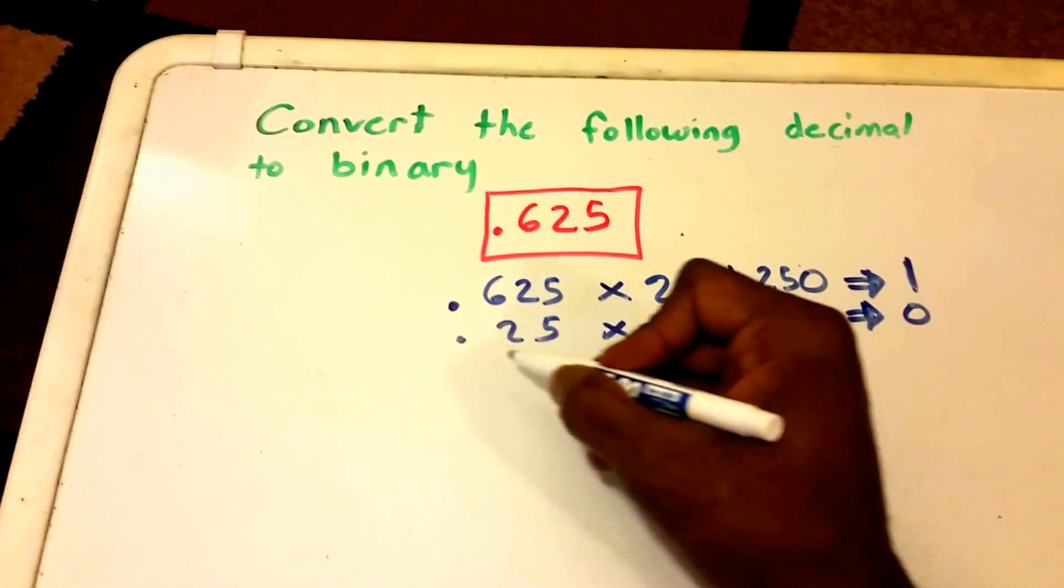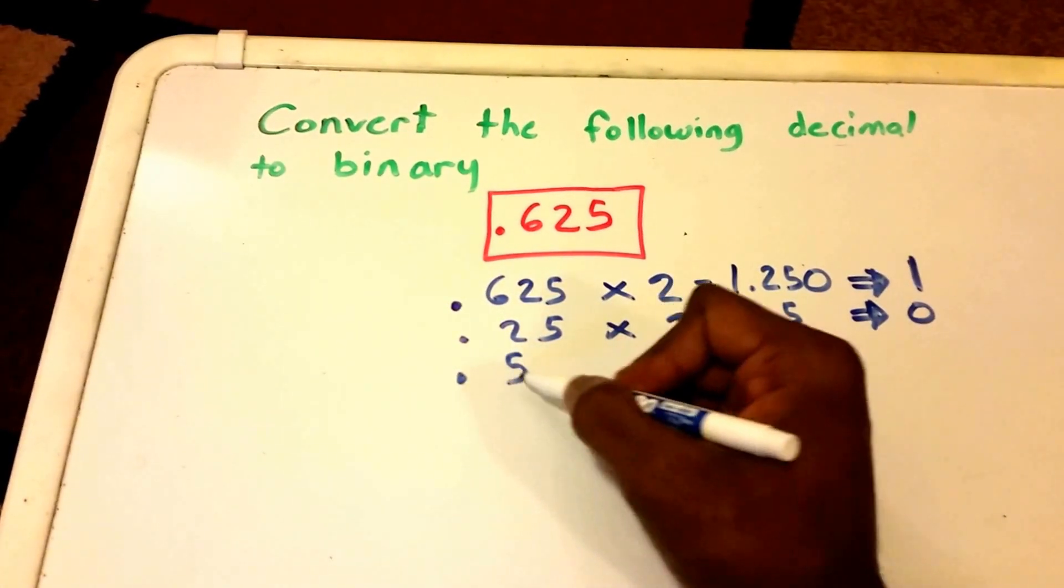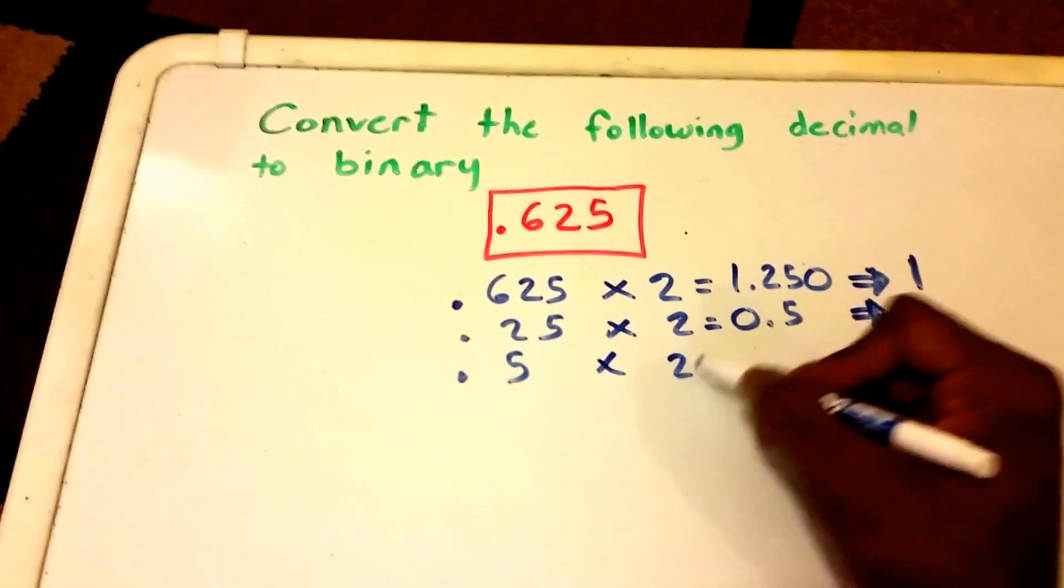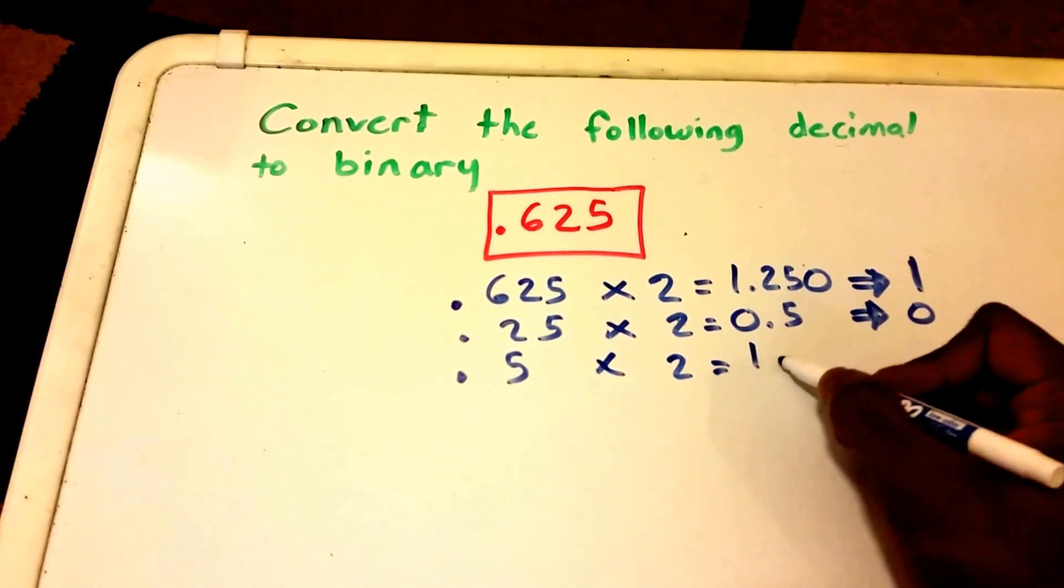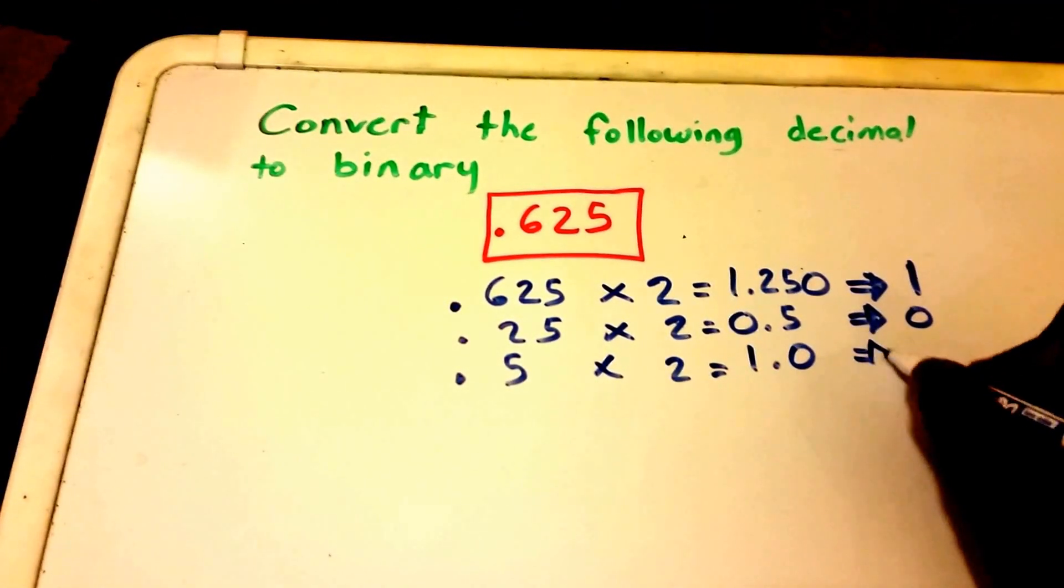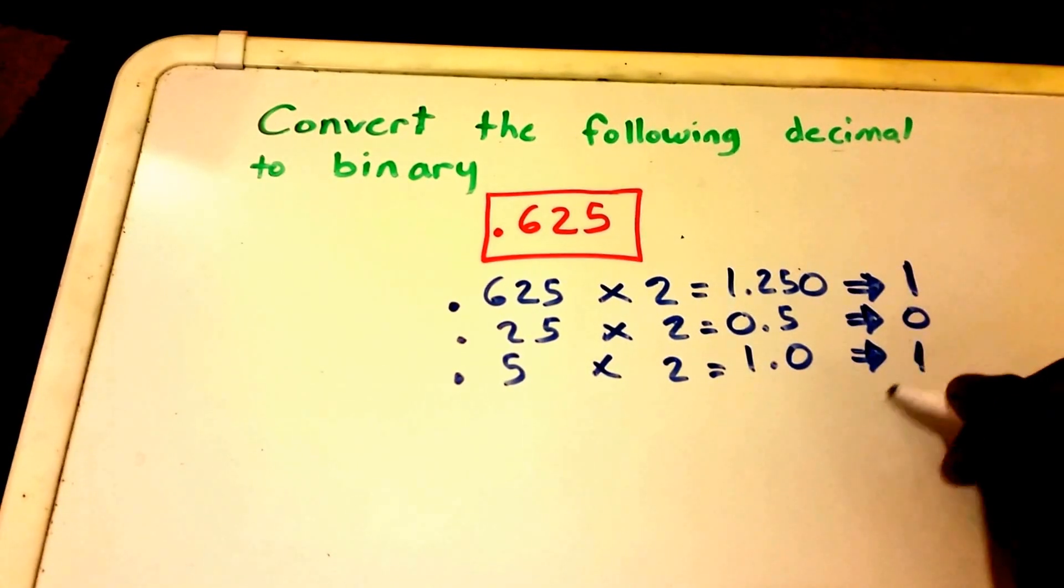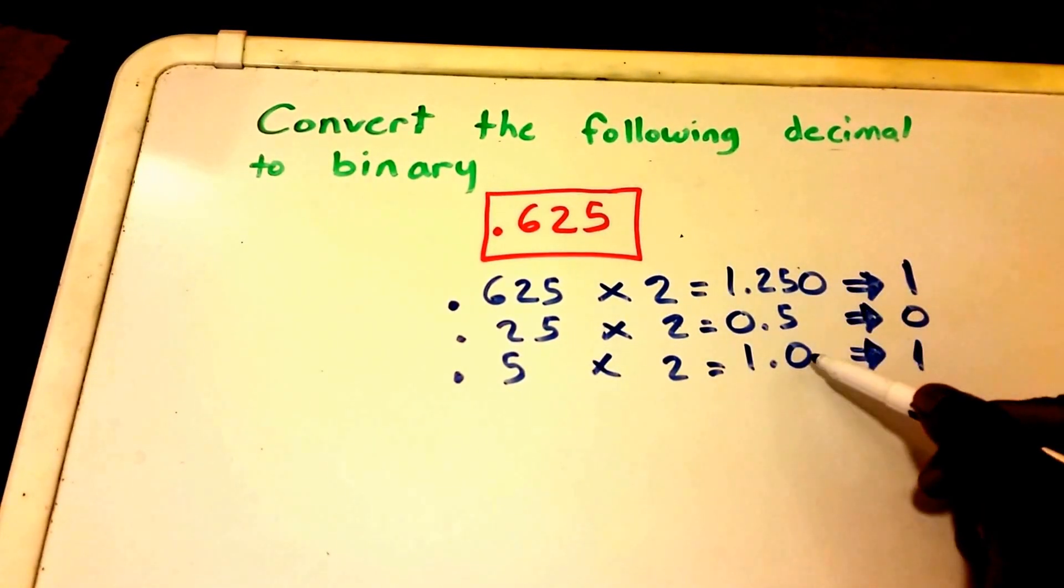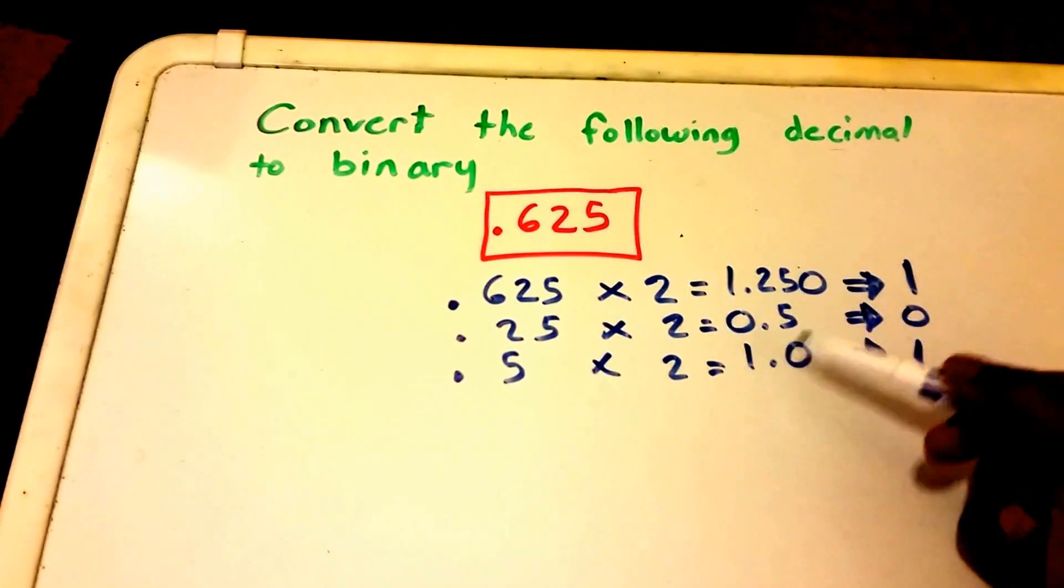Then we take the remainder which is 0.5 and we multiply it by two to get 1.0 and we take the whole number there which is 1 and it becomes our third binary digit and there's no more remainders for us to multiply out. So we can stop there.